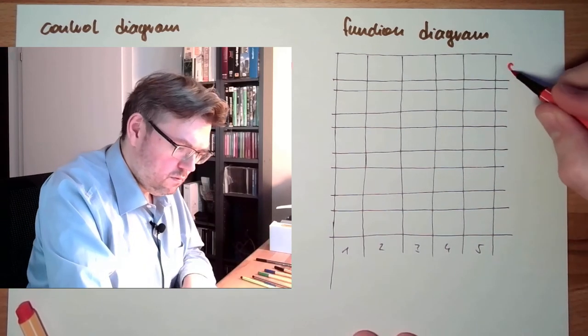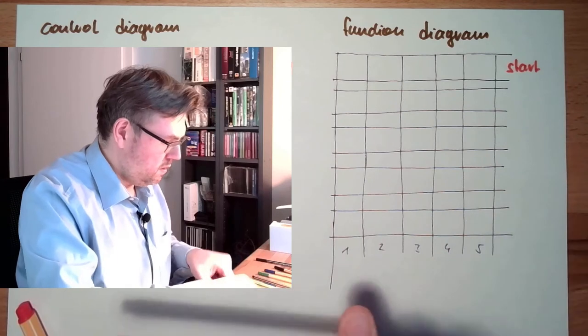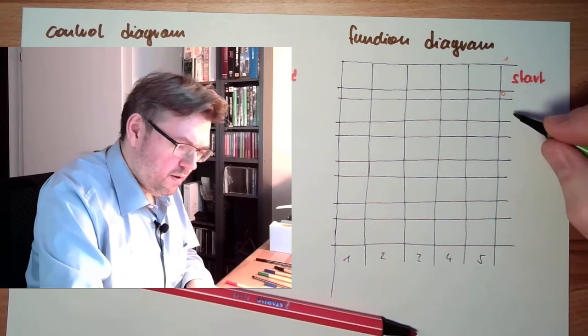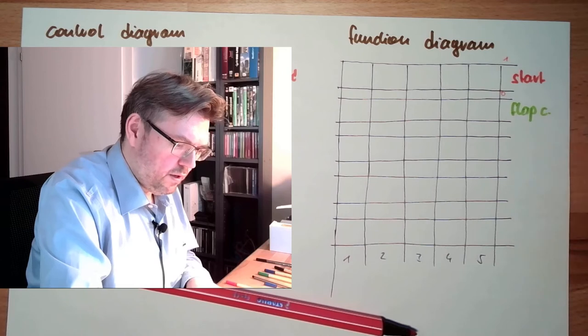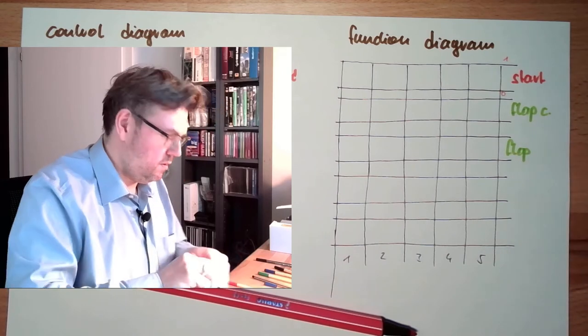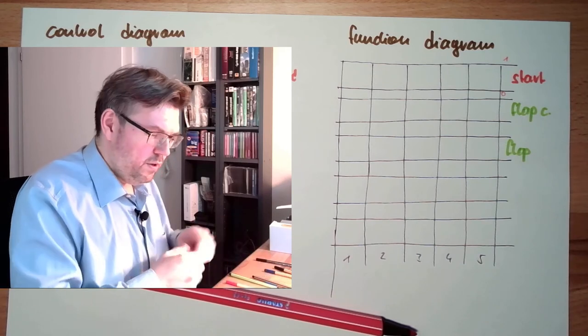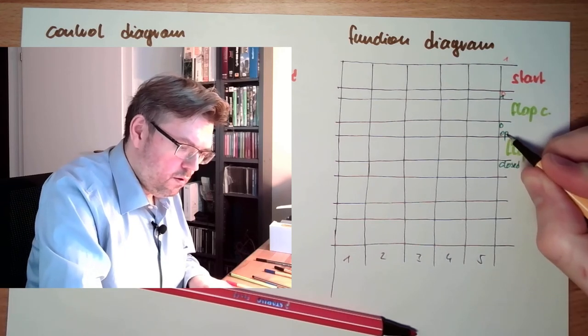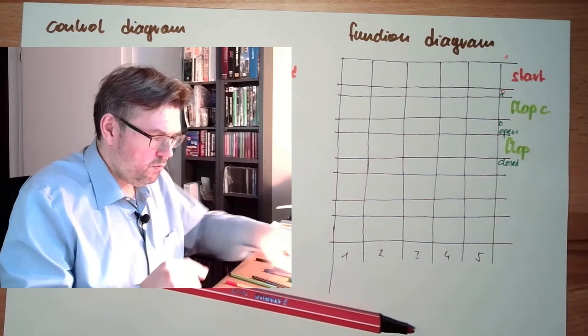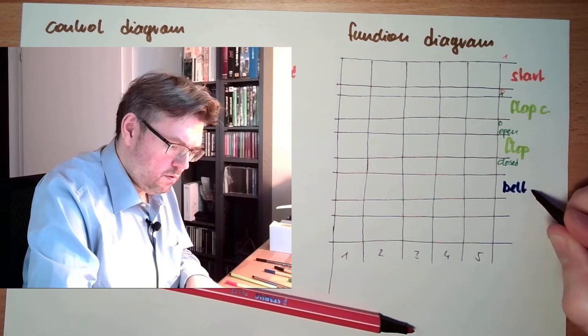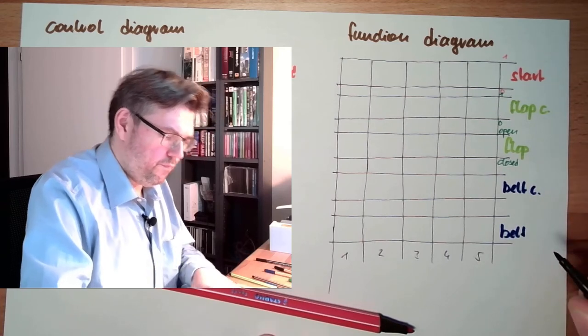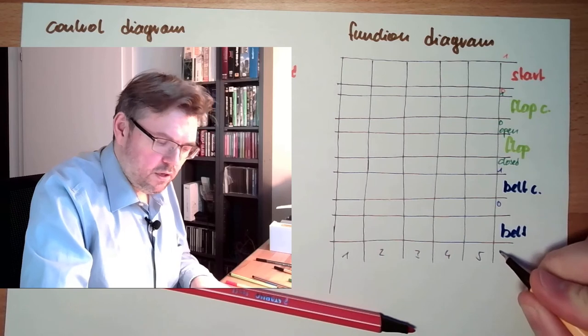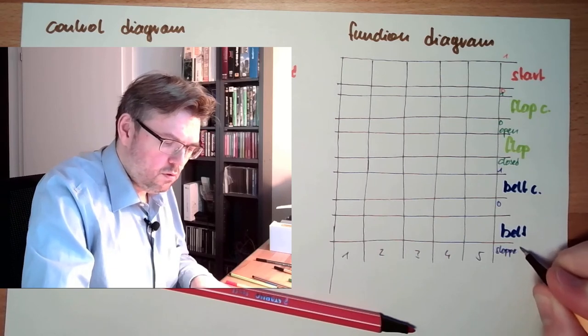So here we have start. It's between zero and one. Here we have flap, flap conductor, and here we have the flap drive. Flap conductor is also between zero and one, and the flap is closed or open. Here we do have the belt conductor and the belt drive.